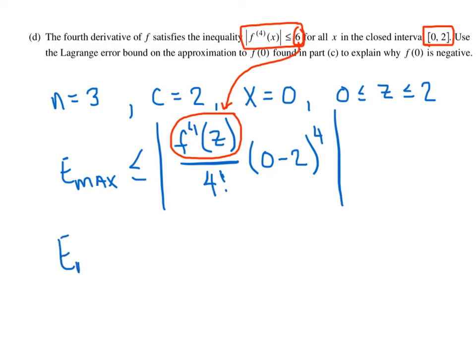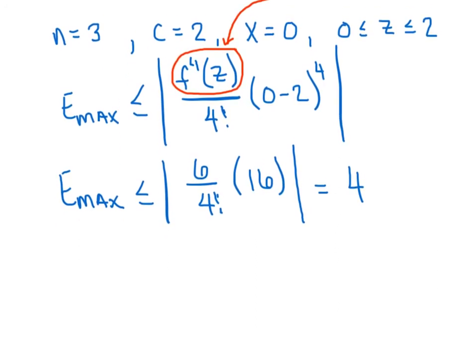And we can now say that our maximum error is less than 6 over 4 factorial times, negative 2 to the fourth would be 16. By the time I get done cleaning that all up, I got a value of 4. So what that means is we could be off by 4 units on either side of our approximation. So we're kind of creating this window or this interval where our real value has to lie within.